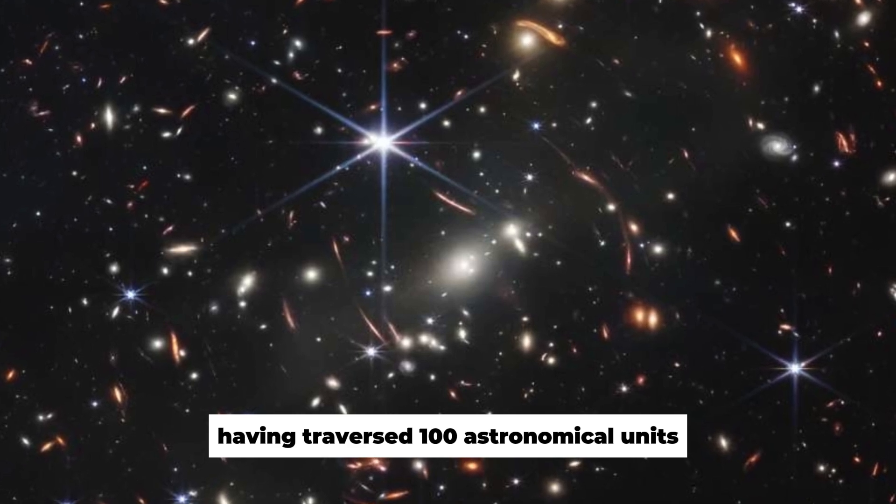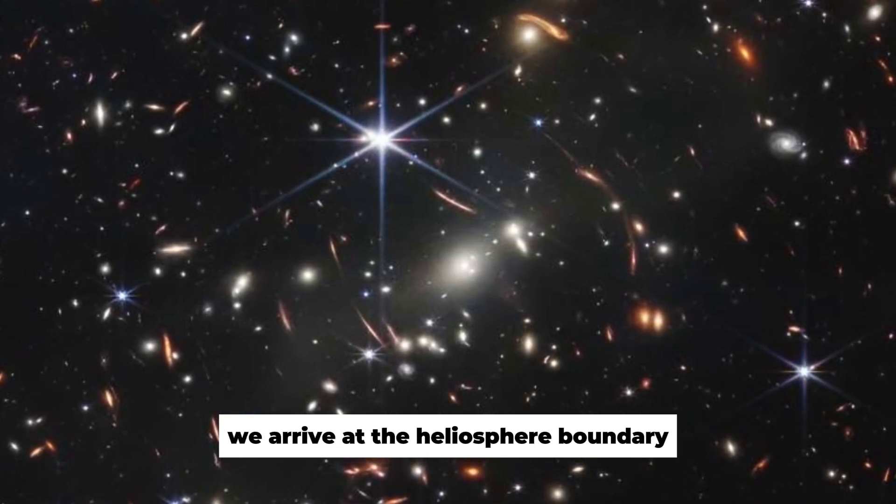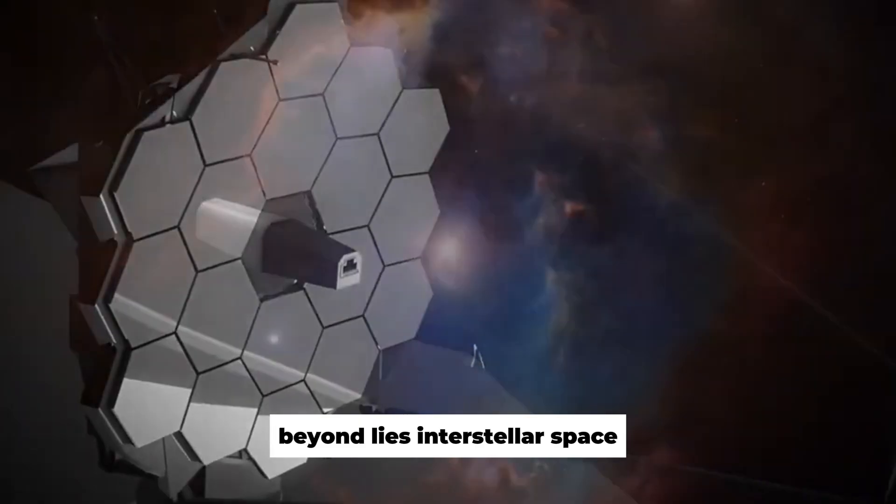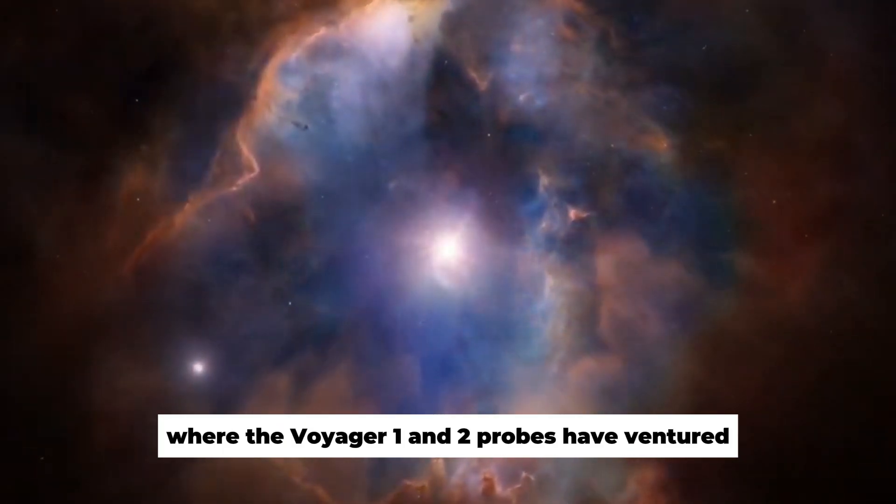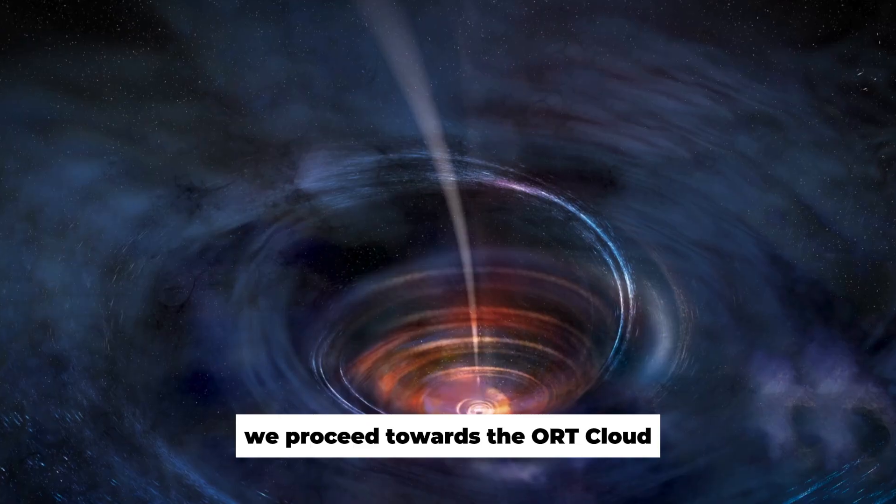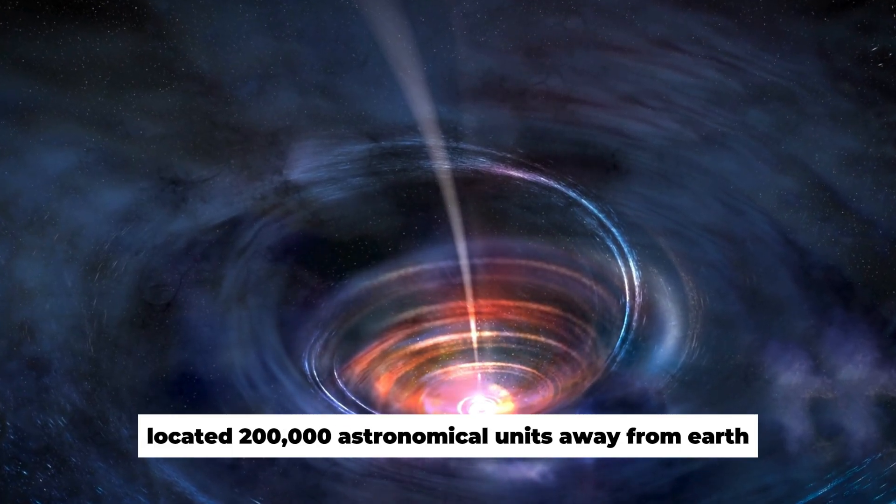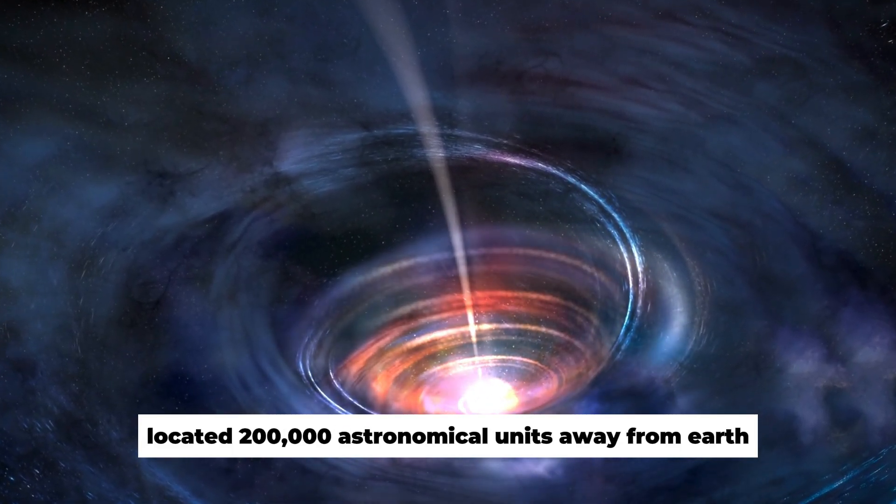Having traversed 100 astronomical units, we arrive at the heliosphere boundary. Beyond lies interstellar space, where the Voyager 1 and 2 probes have ventured. We proceed towards the Oort Cloud, a cluster of asteroids located 200,000 astronomical units away from Earth.